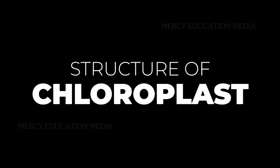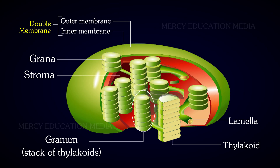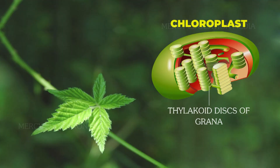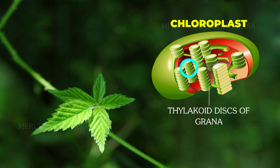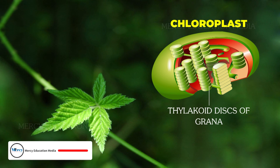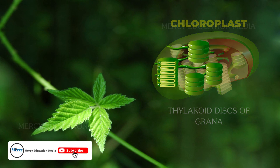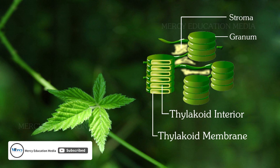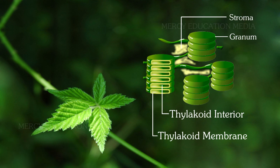Now, let us know about the structure of chloroplast. The space enclosed by the envelope is filled with matrix called stroma. In the stroma, many grana are embedded. In each granum, several disc-shaped lamellae are found. These disc-shaped structures are called thylakoids. They resemble a stack of coins.